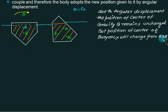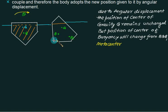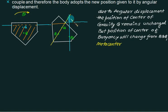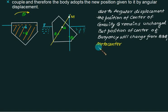We define a point called the metacenter M. The metacenter is obtained by extending the line BG and drawing a vertical through the new center of buoyancy B1 — where these two lines intersect is the metacenter. The body is assumed to oscillate about this point. The distance GM is called the metacentric height. If the metacentric height is positive, the body is in stable equilibrium.